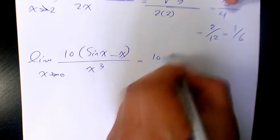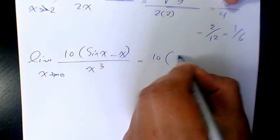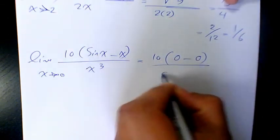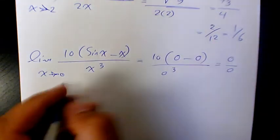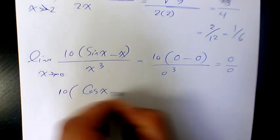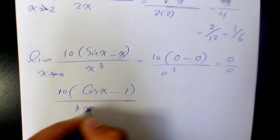That's going to be 10 times sine zero, which is zero, minus zero over zero cubed. That's going to be zero over zero. Then the derivative is going to be 10 times cosine x minus one over 3x squared.